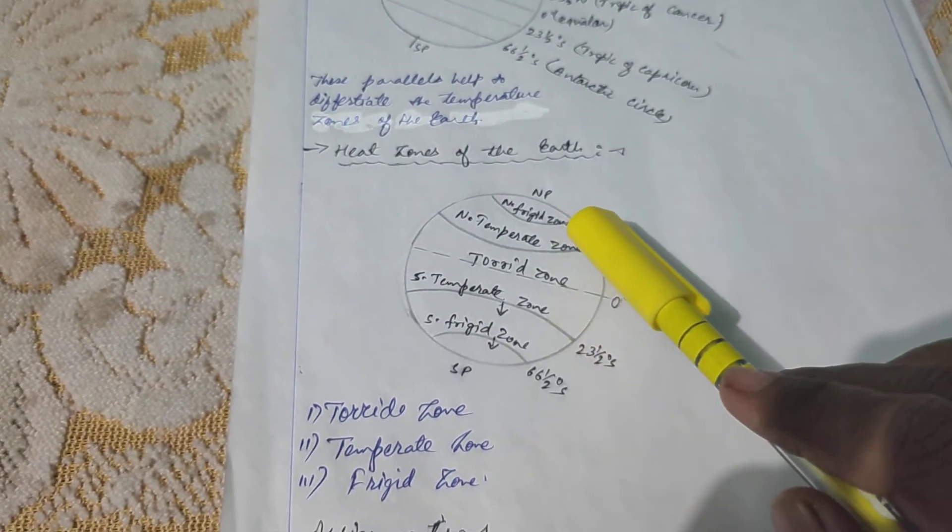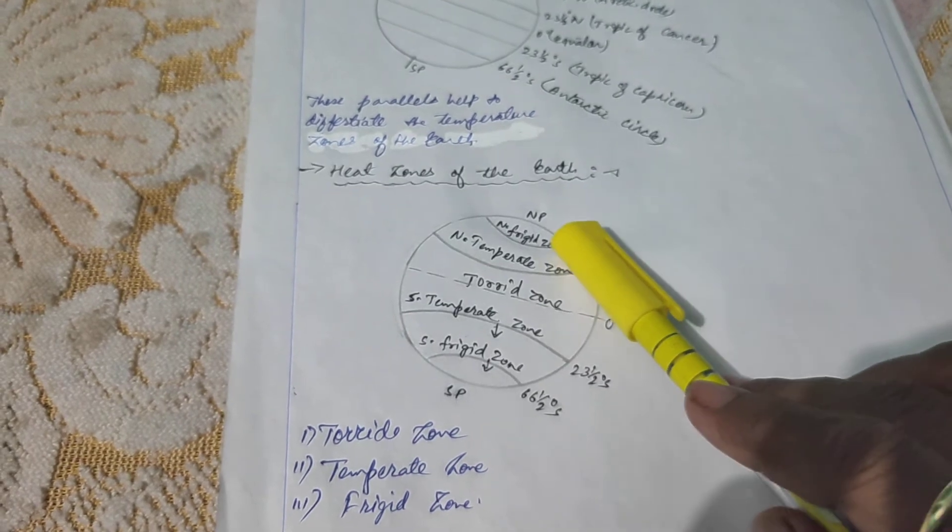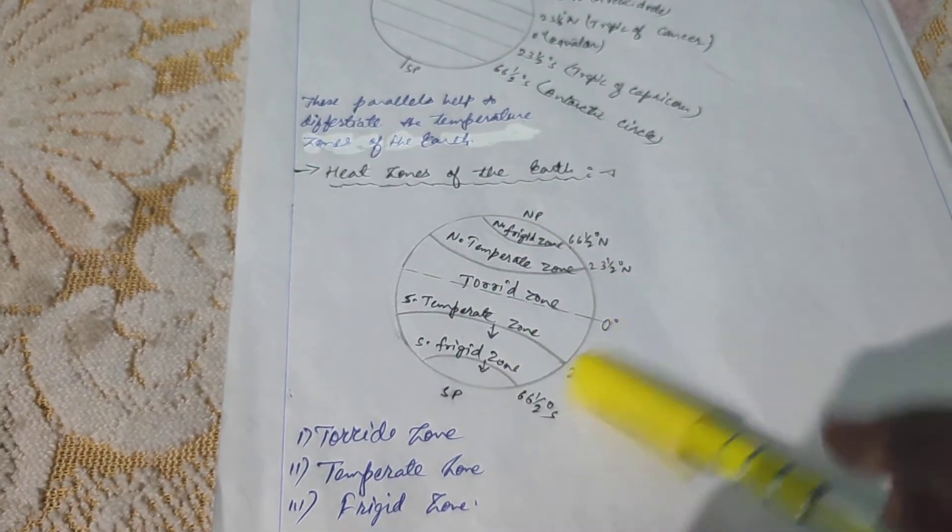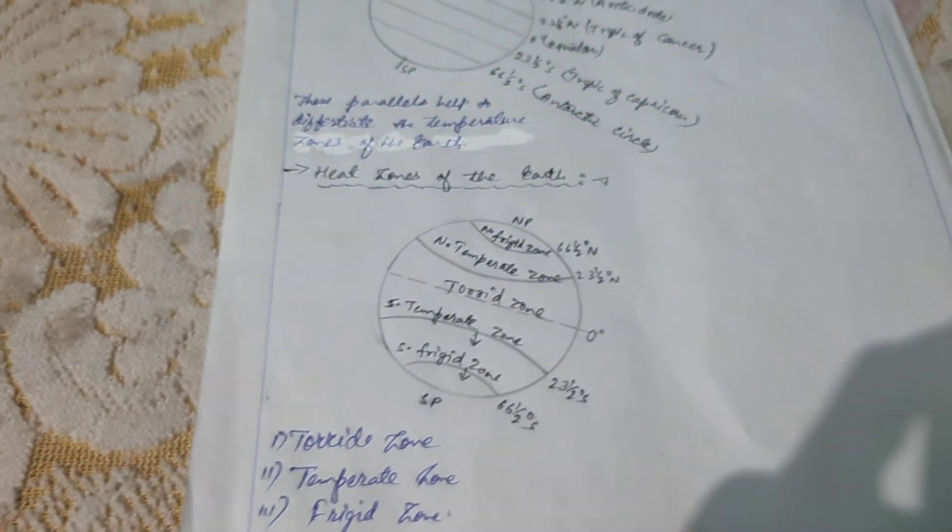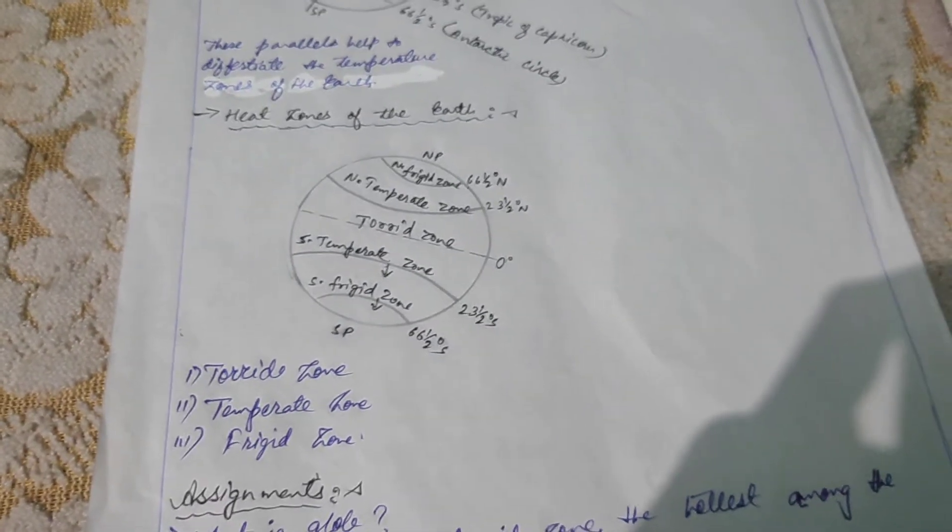This is the picture of the heat zone. This is the torrid zone, north temperate zone, south temperate zone, frigid zone that is north frigid zone, south frigid zone, north pole and south pole. Let's discuss this heat zone in details.